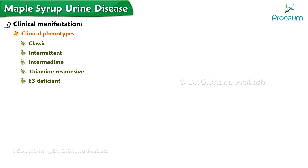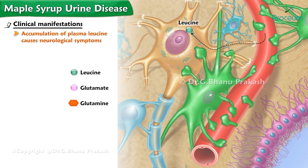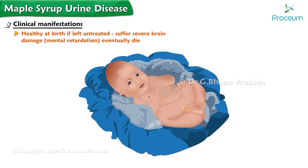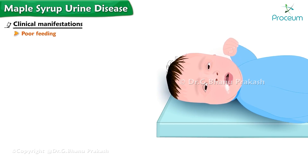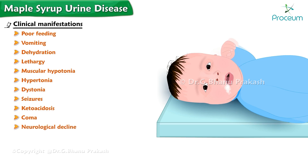Classic MSUD is the most common form of the disorder. Accumulation of plasma leucine causes neurological symptoms. Leucine is rapidly transported across the blood-brain barrier and is metabolized to presumably yield glutamate and glutamine. Infants with this disease seem healthy at birth, but if left untreated, suffer severe brain damage, mental retardation, and eventually die. From early infancy, symptoms include poor feeding, vomiting, dehydration, lethargy, muscular hypotonia, dystonia, seizures, ketoacidosis, coma, and neurological decline.